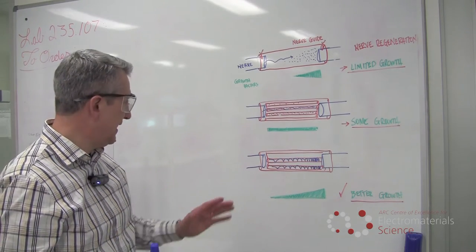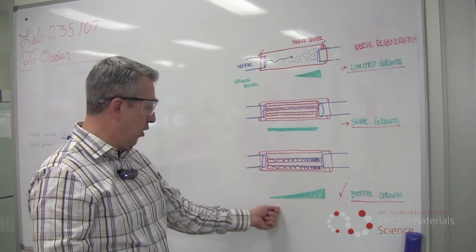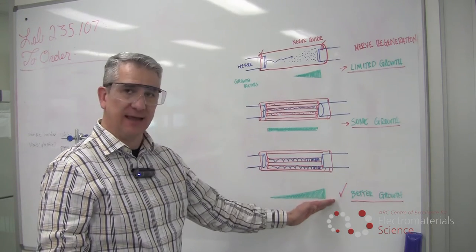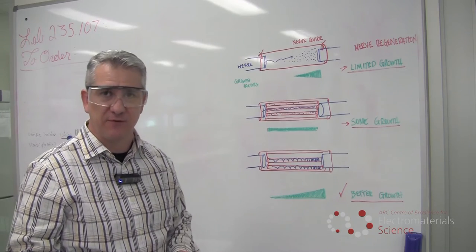What the neurons prefer to see is a concentration that moves from a low end to a higher end, and this is what gives the best results for nerve repair.